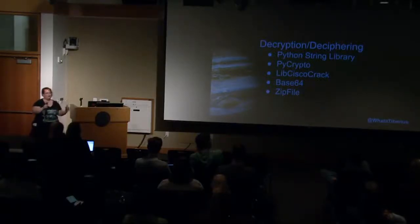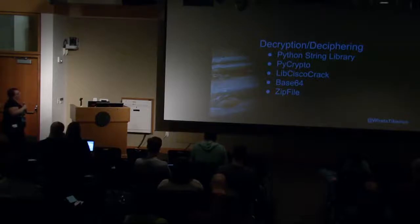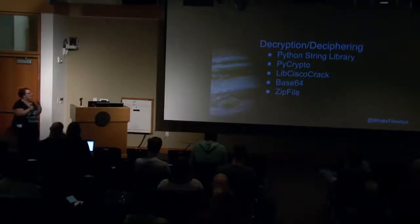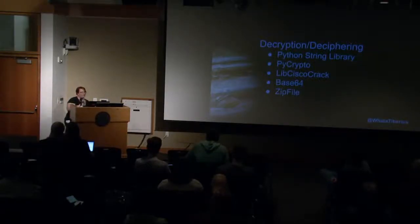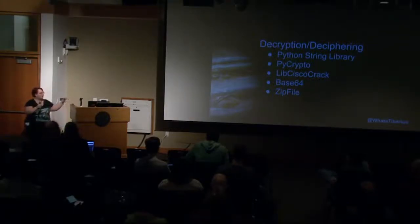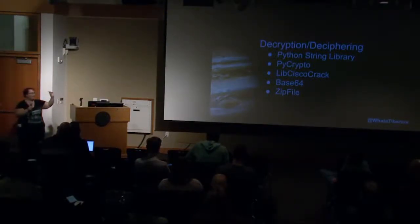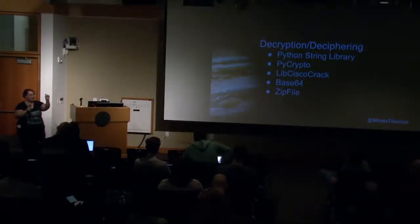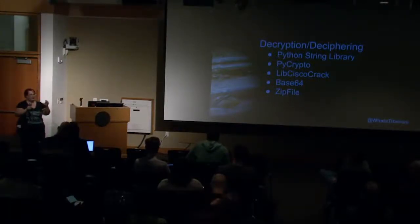The next set of tools are used for decryption of ciphers. The Python string library comes standard and has a function called maketrans. You can use this to take a string of letters and change them to another string — so you can take a, b, c and translate every a into a d, every b into an e, every c into an f. You can use it for basic conversion and build these up for deconversion, so if you've got an encrypted string of letters, you can use this to very rapidly try and figure out what it meant.